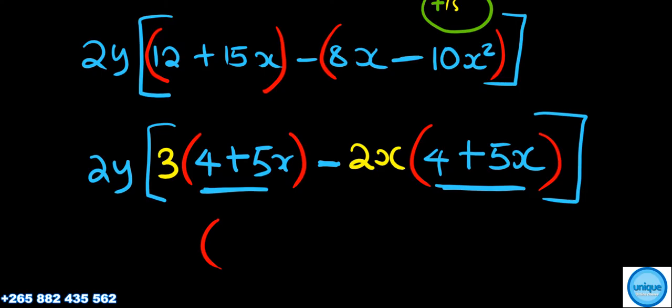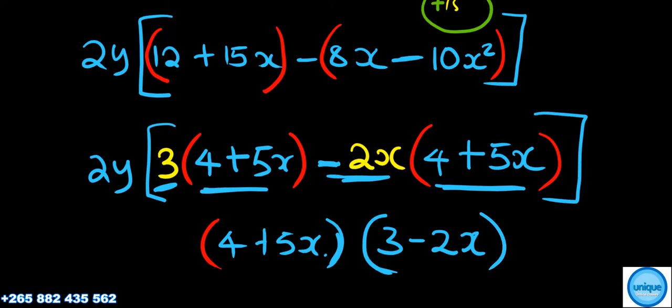We're going to have 4 plus 5x, 4 plus 5x, and the other bracket we can combine. We're going to have 3 minus 2x.